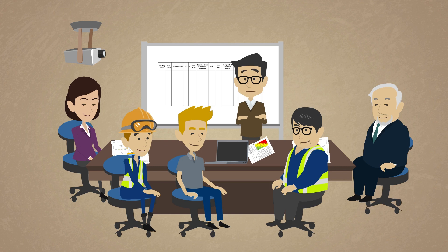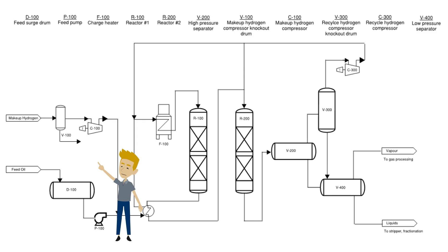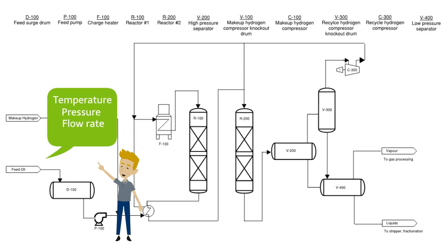This will give us a better understanding of how the system works. The first thing we need to understand is the feed coming into the system. The feed oil comes from the inlet of the unit and enters the feed surge drum. The important parameters to understand on this line include the temperature and pressure, the flow rate, and the composition, including any impurities which could be in the feed.